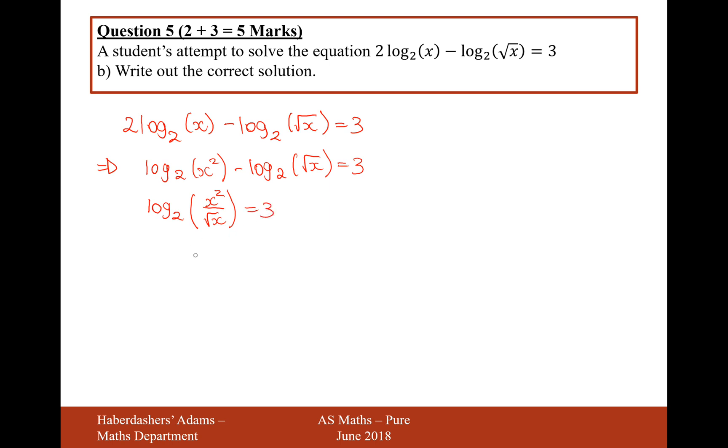Now I can move the 2 onto the other side. I'm effectively going to raise everything to the power of 2 on both sides to get rid of the 2 on the logarithm. I'm going to pick up this little 2 and let it bump up the 3 there. So it's going to be x squared over root x equals 2 to the power of 3, which is 8.